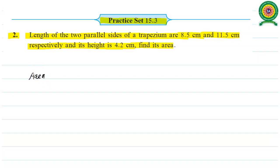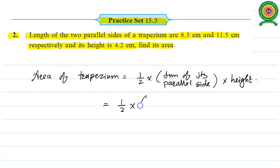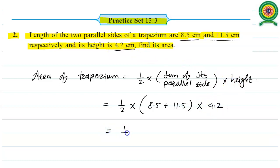So area of trapezium — no need to draw the figure. We may have direct values. Area of trapezium equals half times sum of its parallel sides into height of the trapezium. So area of trapezium equals half times 8.5 plus 11.5, into height 4.2. Half times 8.5 plus 11.5 equals 20, into 4.2. Since 10 times 4.2 equals 42, we get 42.